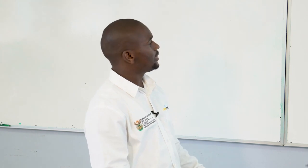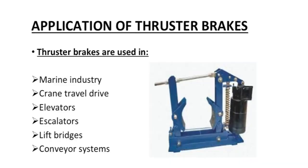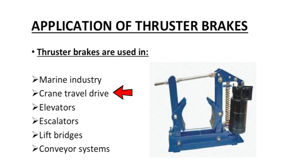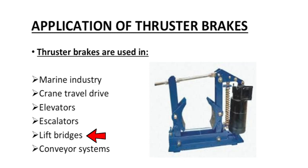Main components of the thruster brake: a hydraulic centrifugal pump connected to the thruster piston — both connected to each other — a braking spring connected to the piston, friction pads, and a brake disc. Applications: thruster brakes are used in marine industries, crane travel drives, elevators, escalators, and lifting bridges.